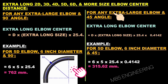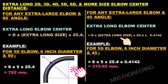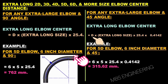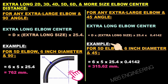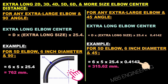The formula for an extra long 45-degree elbow center distance is: Extra Long Elbow Center = D × Extra Long Size × 25.4 × 0.4142. For example, for a 5D elbow with 6-inch diameter at 45 degrees: 6 × 5 × 25.4 × 0.4142. The center distance for this 5D elbow is 315.62 millimeters.